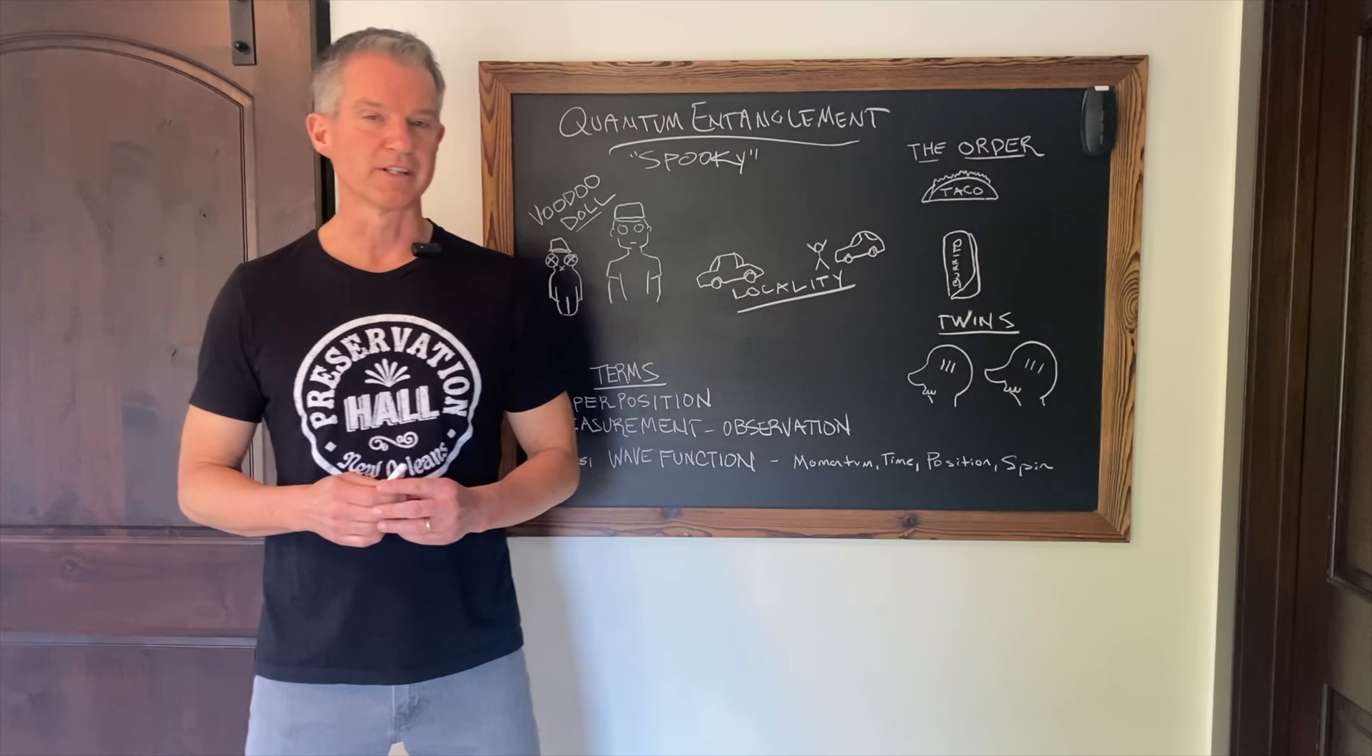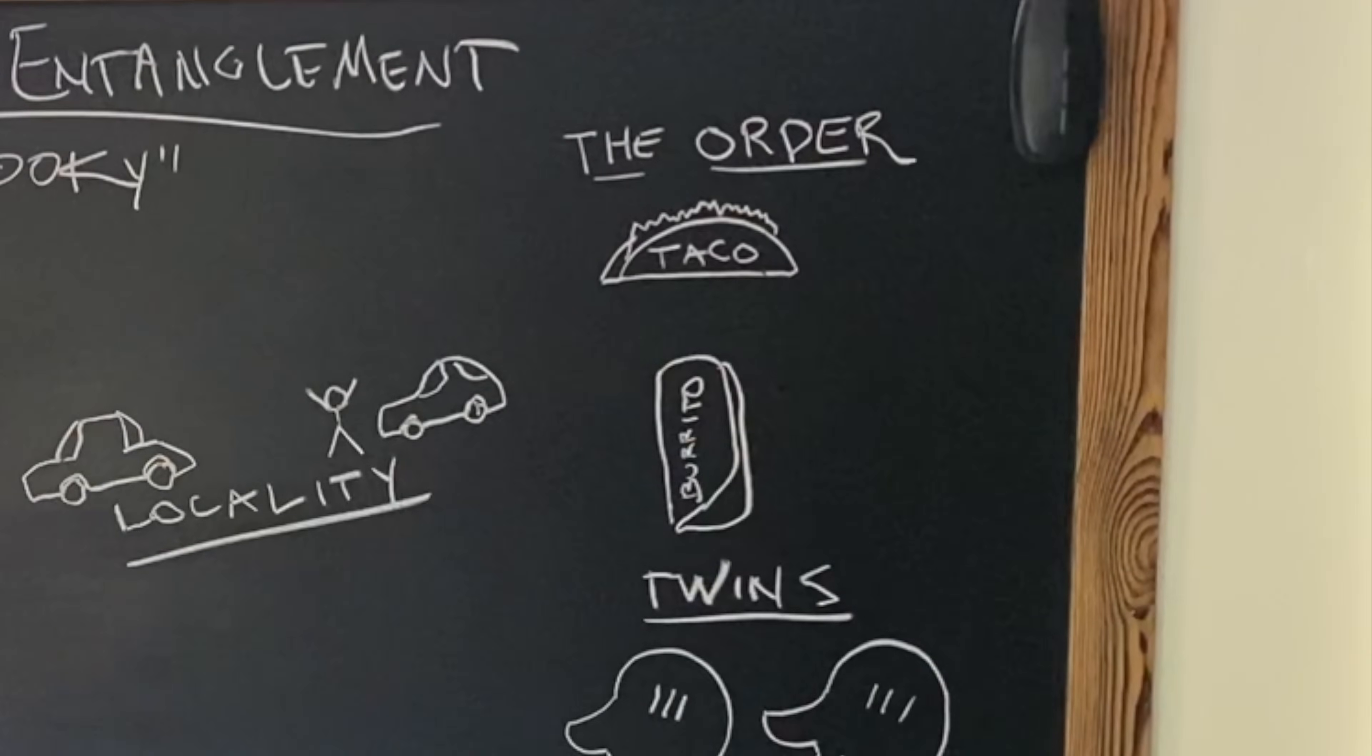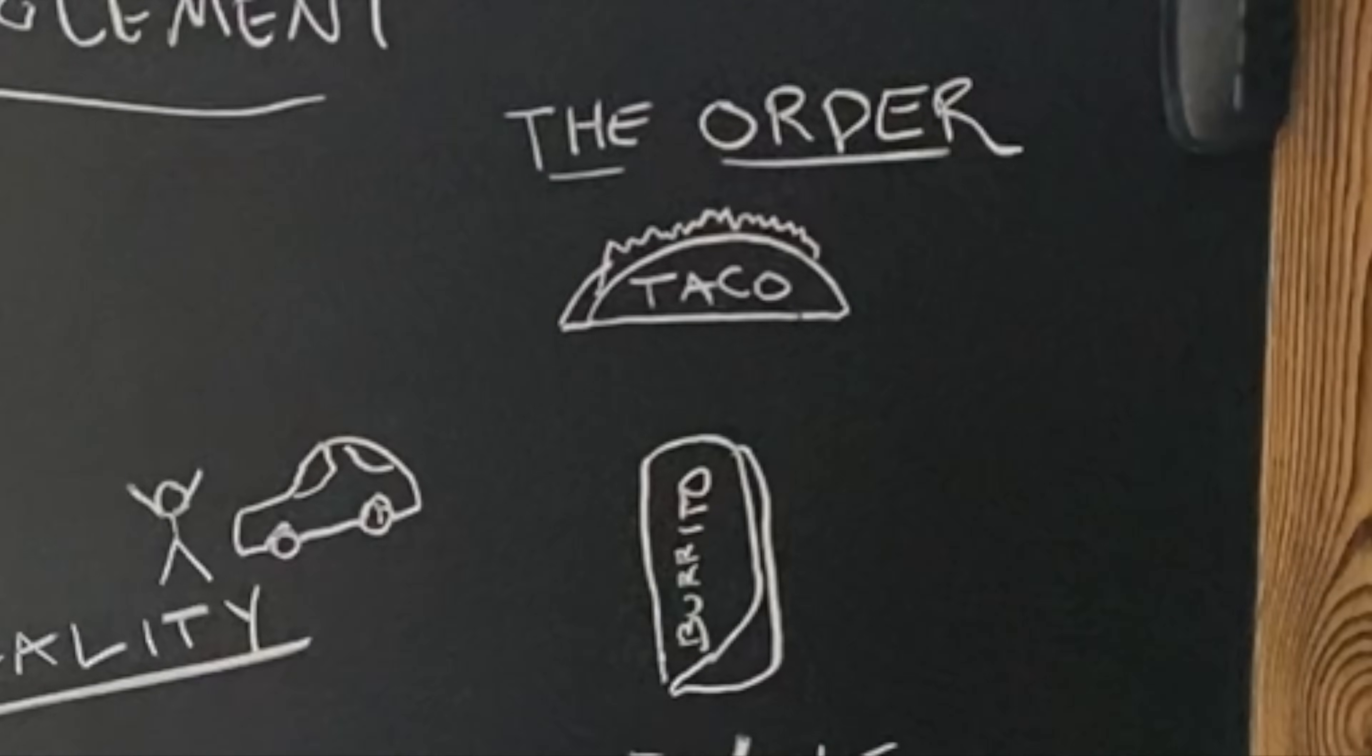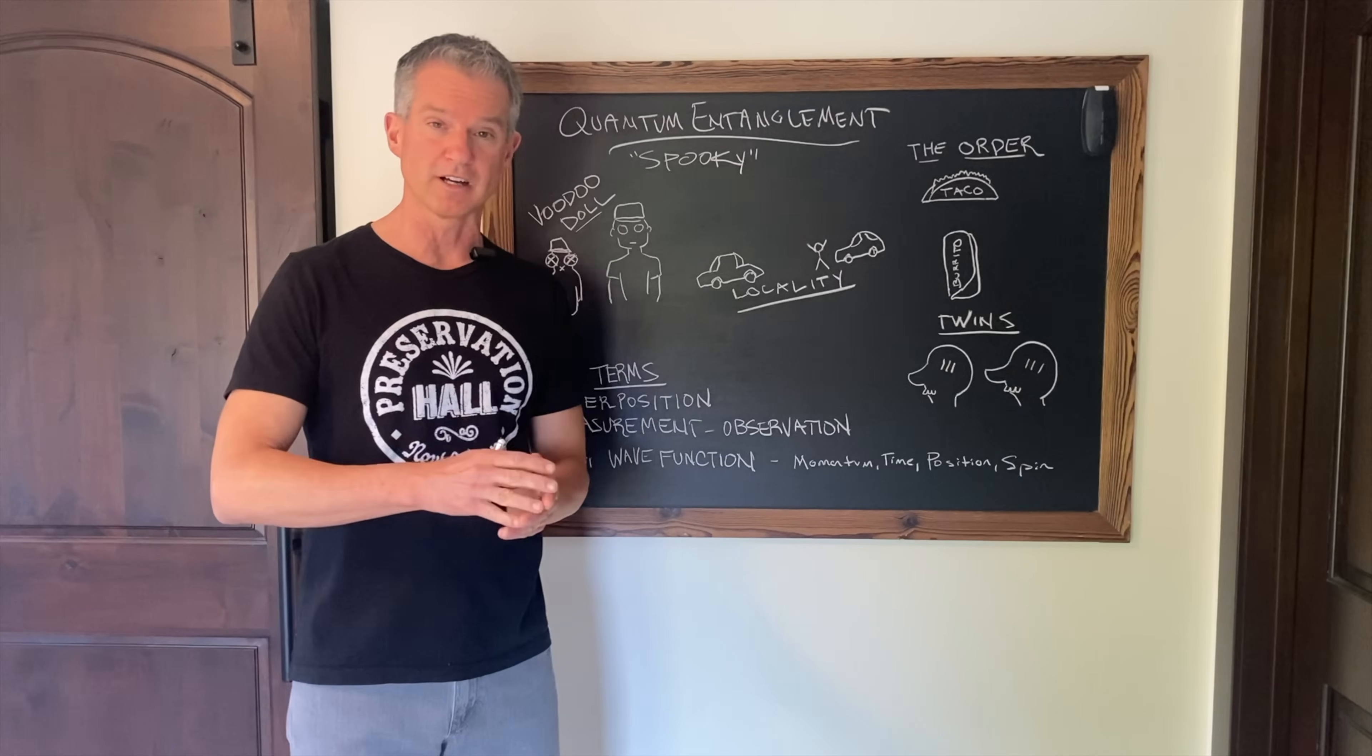You might have heard the analogy of the drive-thru order. Let's say you and your friend go to Taco Bell. You order a taco and a burrito. You ask for them to be put in separate bags, because you're going your separate ways. So in one bag is a taco, another is the burrito. Now, since this is the Taco Bell drive-thru, you look in the bag, you confirm there's one taco, one burrito.